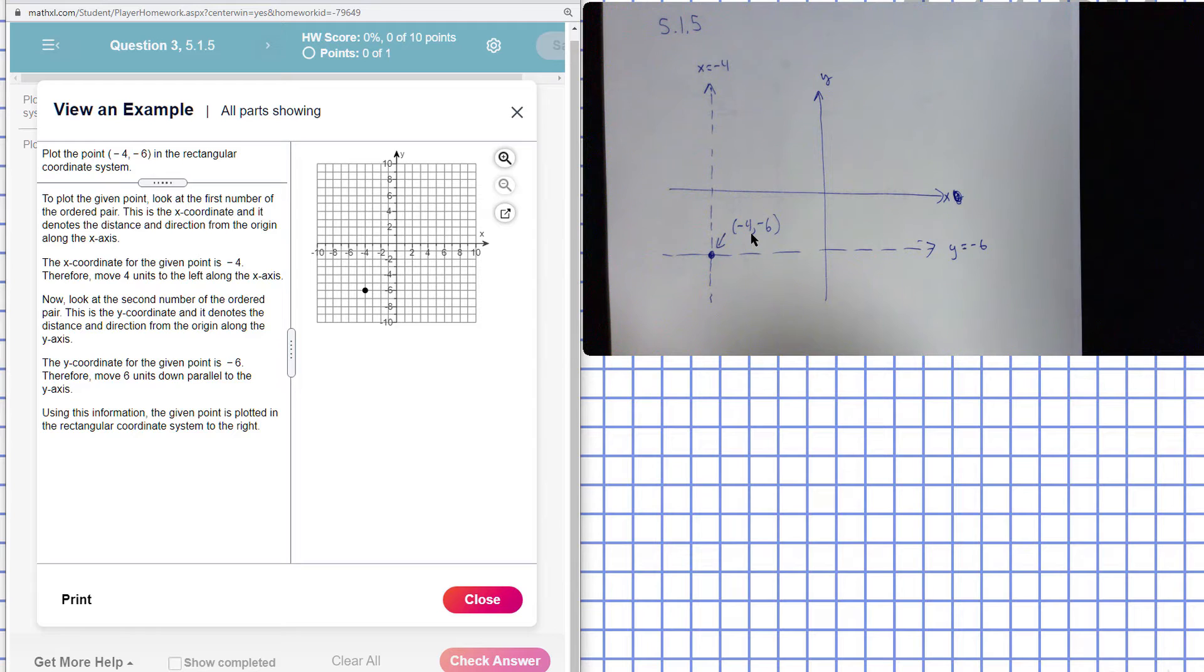The first number is called the x-coordinate. So I draw a line here to show this represents the line of points where the x-coordinate is equal to negative four.